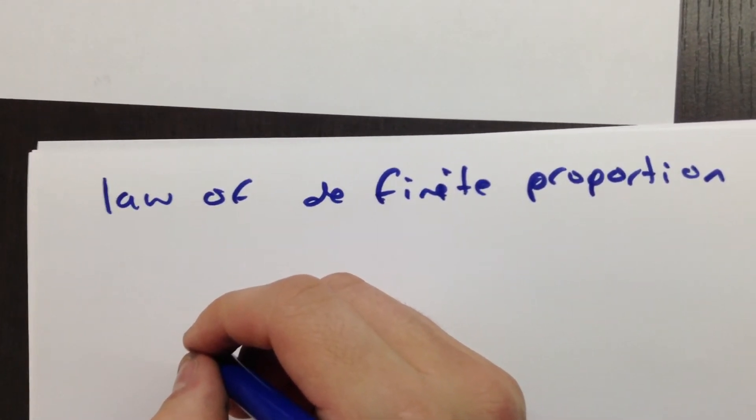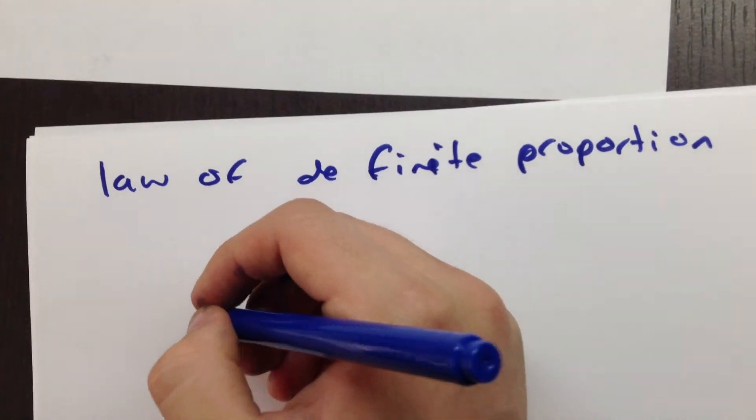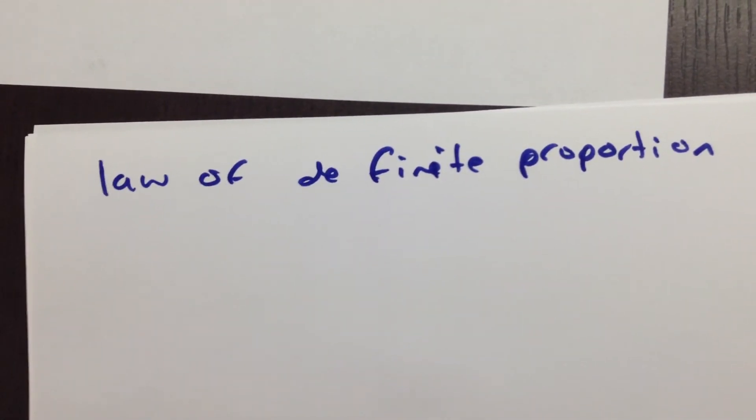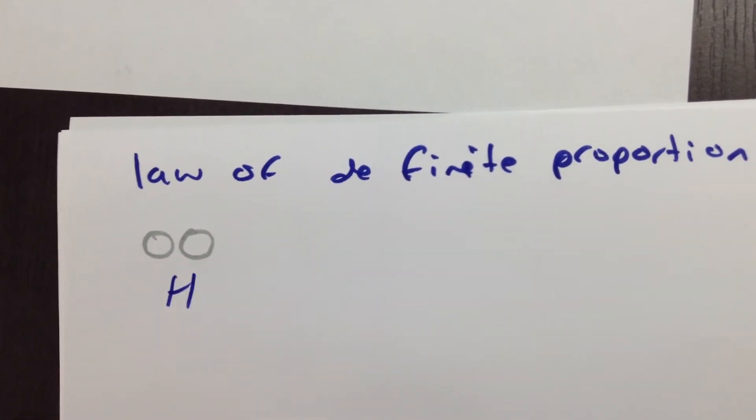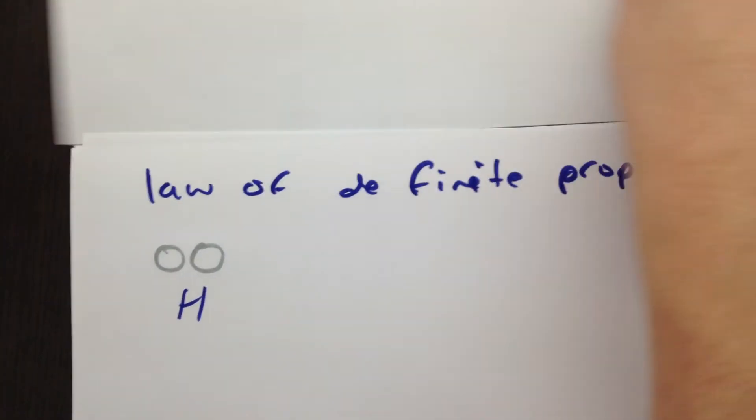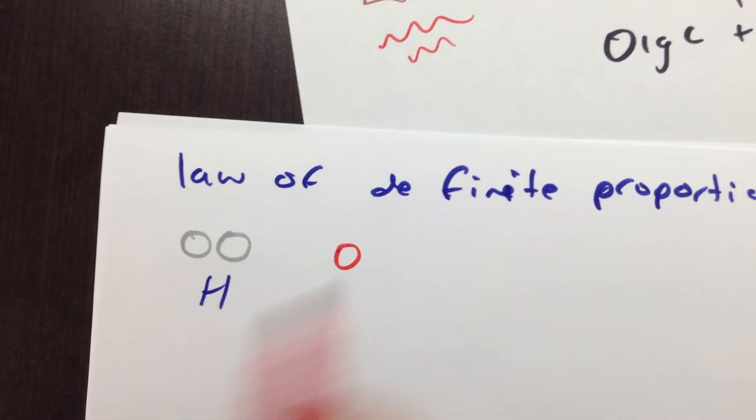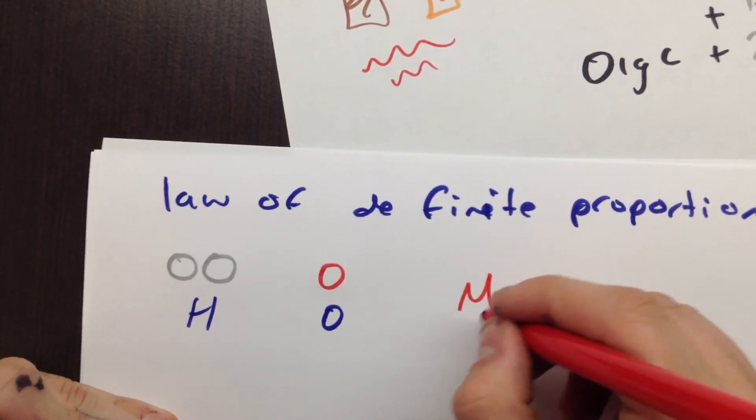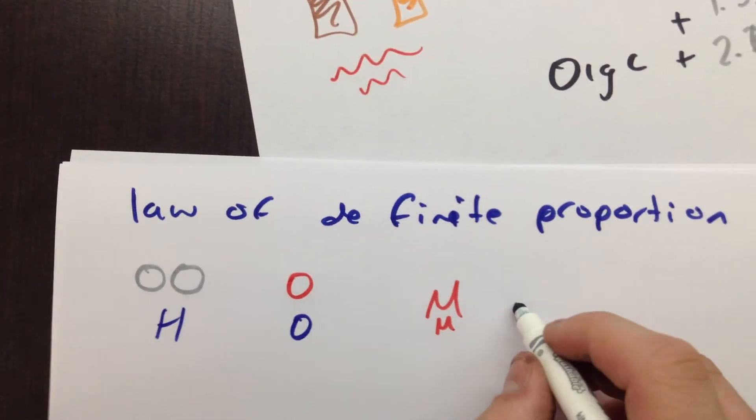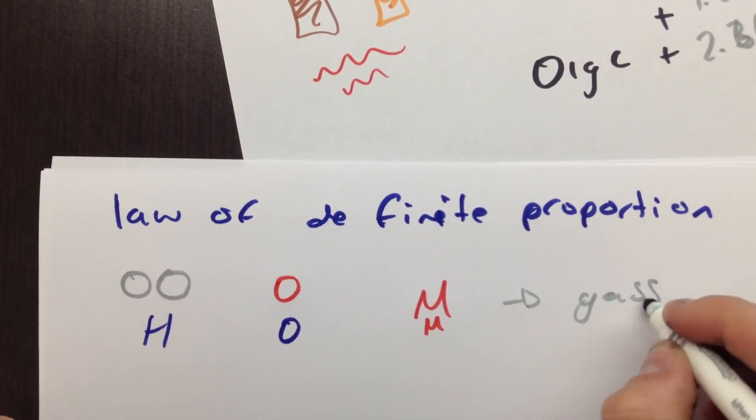Let's say that we have two parts hydrogen and one part oxygen and add them up with fire to create gaseous water.